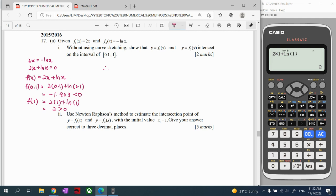Okay, 2 times 1 plus ln(1), so what is the value? 2, positive. So from here we can do our conclusion: we have different signs. Since f(0.1) is negative and f(1) is positive, there has different sign.